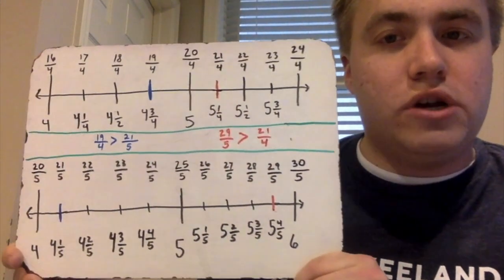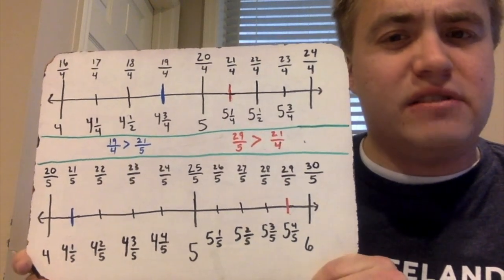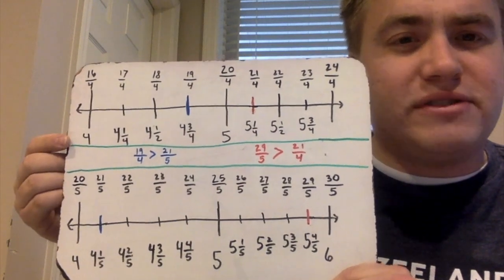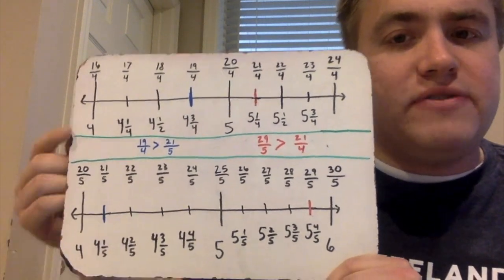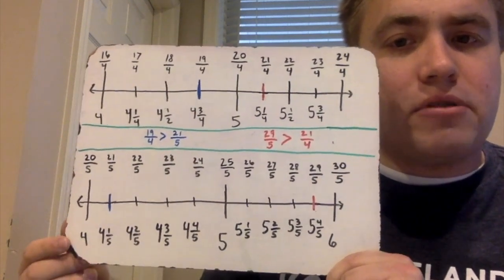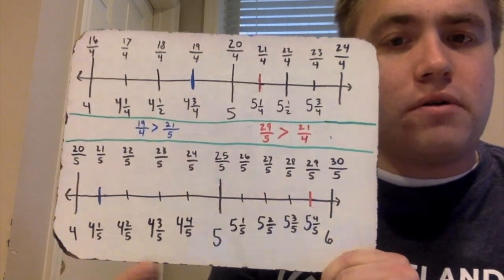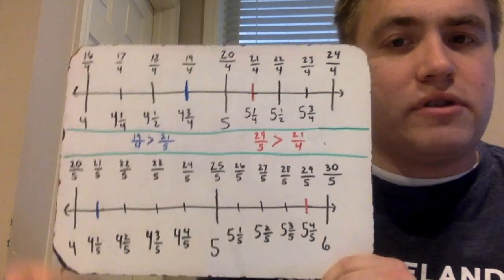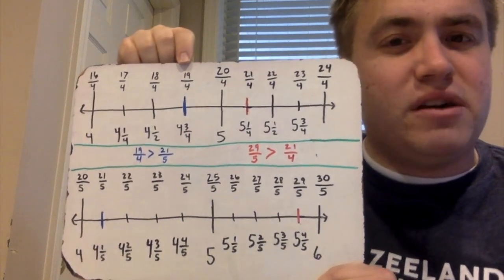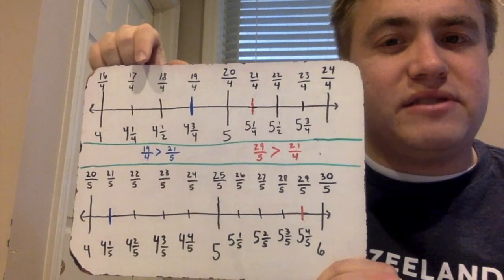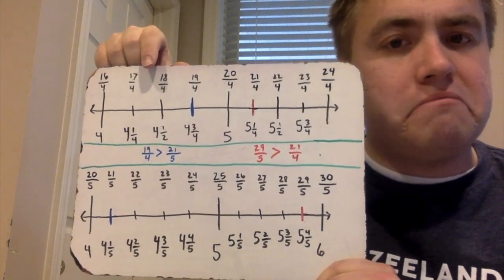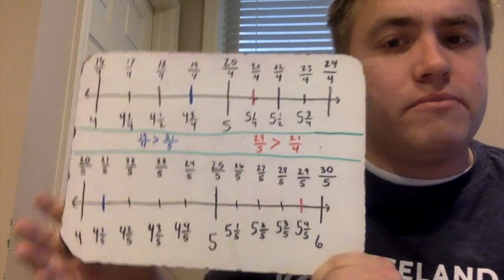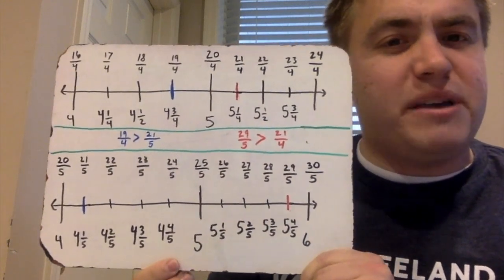I have two number lines here — I know there's a lot written on this whiteboard, but bear with me. My number lines both start at four, not zero, and both go from four to five to six, but they're broken up differently. The one up here is broken up into fourths because the denominator is four, and the denominator tells me how many total parts there are. Down here it's broken up into fifths.